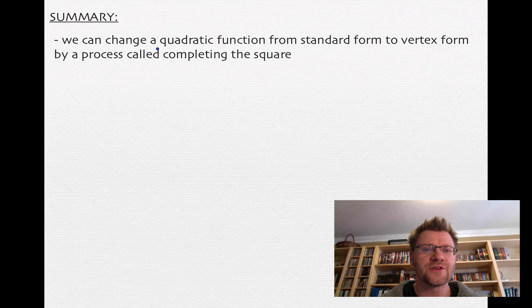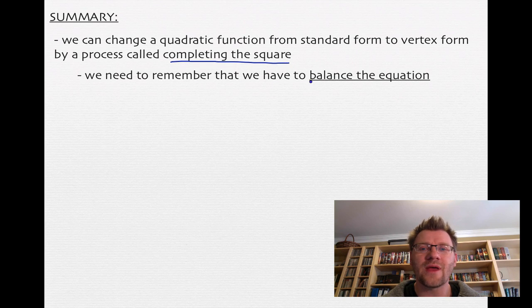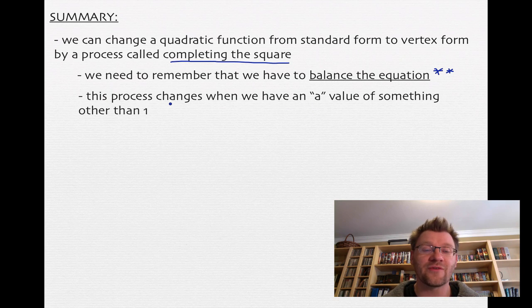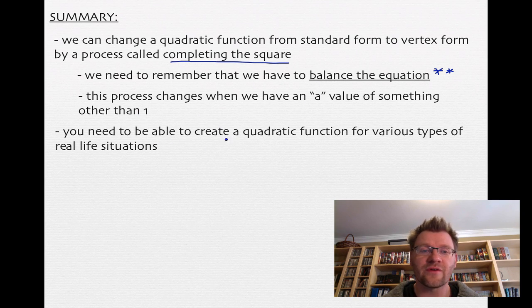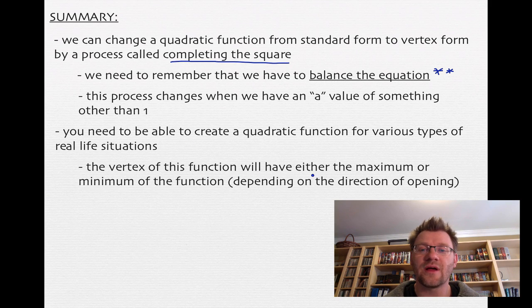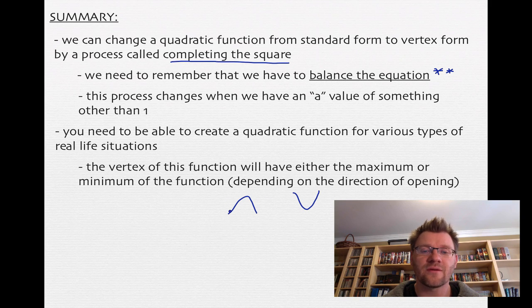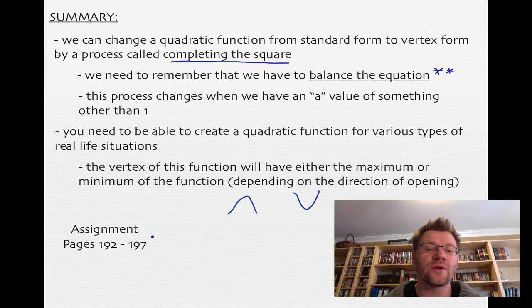In summary: we can change a quadratic function from standard form to vertex form by completing the square — a process you need to become very familiar with. Remember to always balance the equation, especially when there's a coefficient in front of the brackets, since that changes the process. You also need to create quadratic functions for real-life situations — writing it in words first helps. The vertex gives either a maximum or minimum depending on the direction of opening. Your assignment is on pages 192 to 197 in your text.